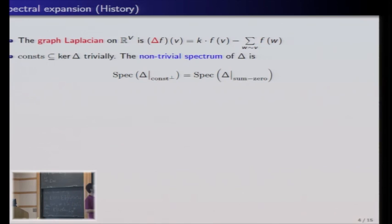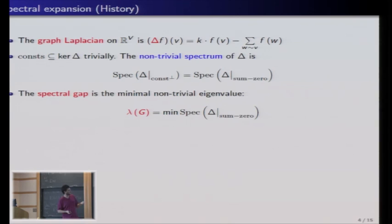And the non-trivial spectrum is everything else, so we look at the functions, the orthogonal complement to the constant, which are the functions with sum to zero. And we call the minimal eigenvalue there the spectral gap of the graph. So the minimal eigenvalue of the Laplacian on functions with sum to zero.